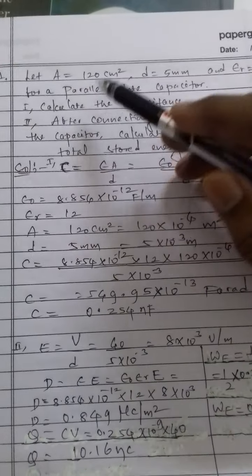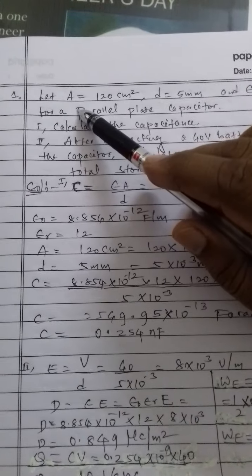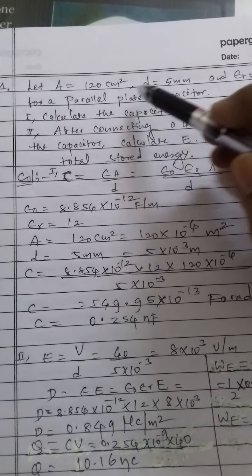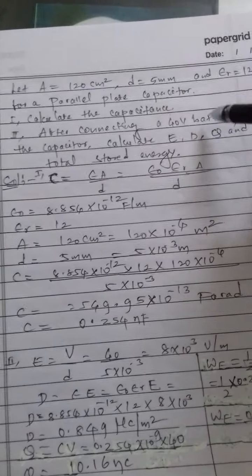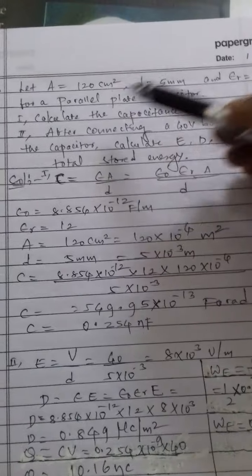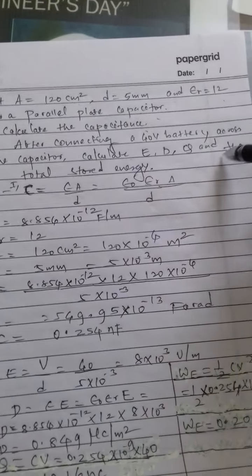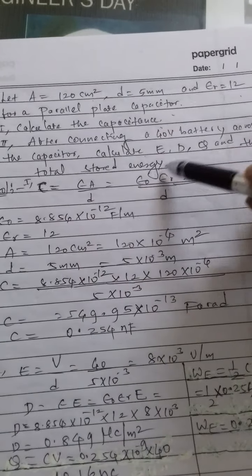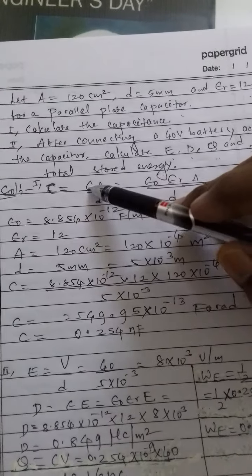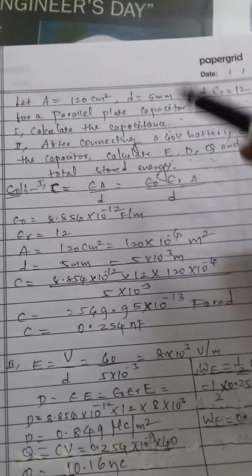Now for a numerical example on parallel plate capacitors: given A equals 120 cm², d equals 5 mm, and epsilon_r equals 12. Calculate the capacitance. After connecting a 40-volt battery across the capacitor, calculate the electric field E, flux density D, charge stored Q, and total stored energy.